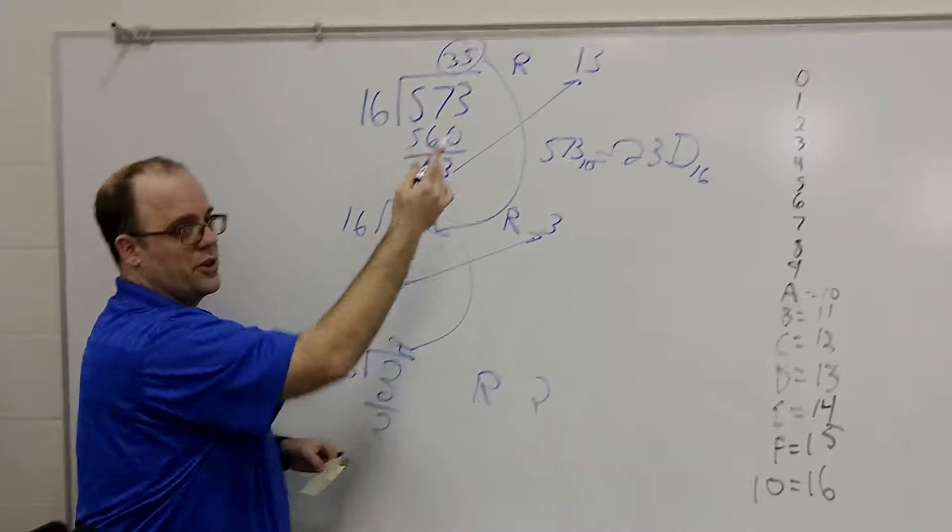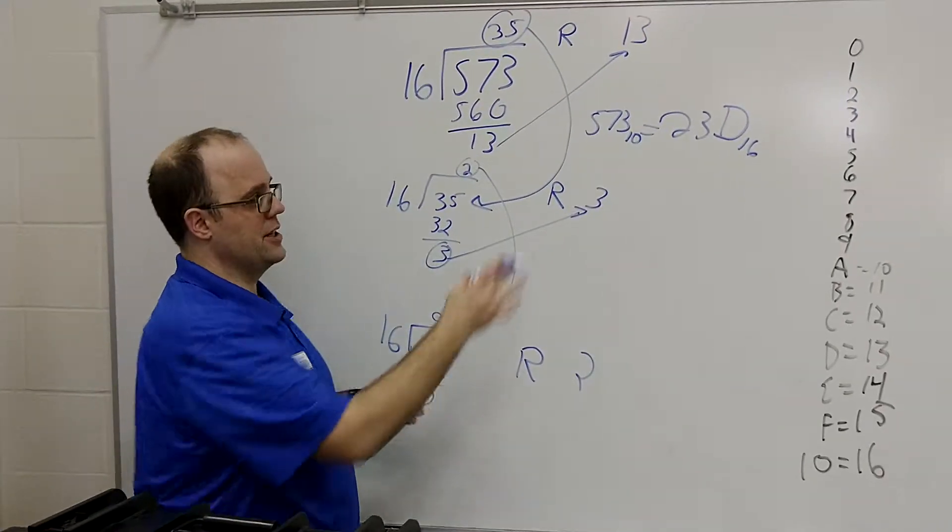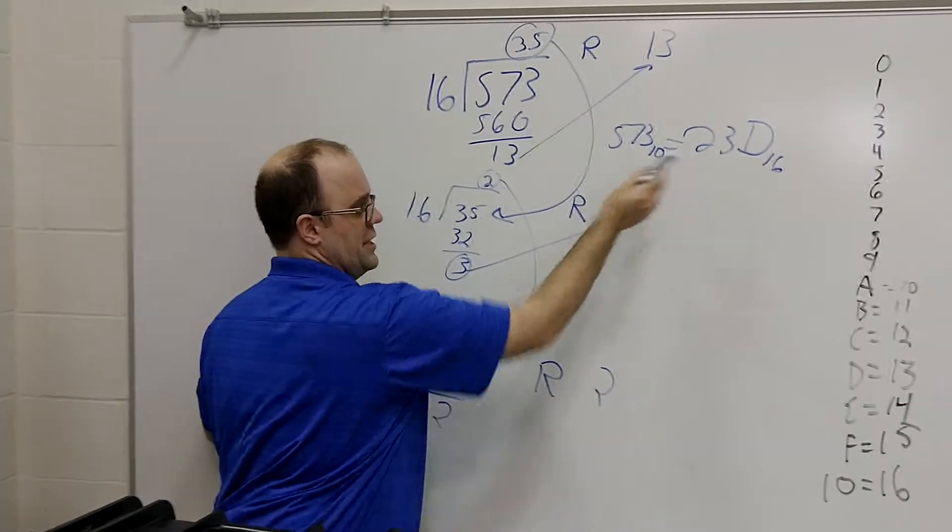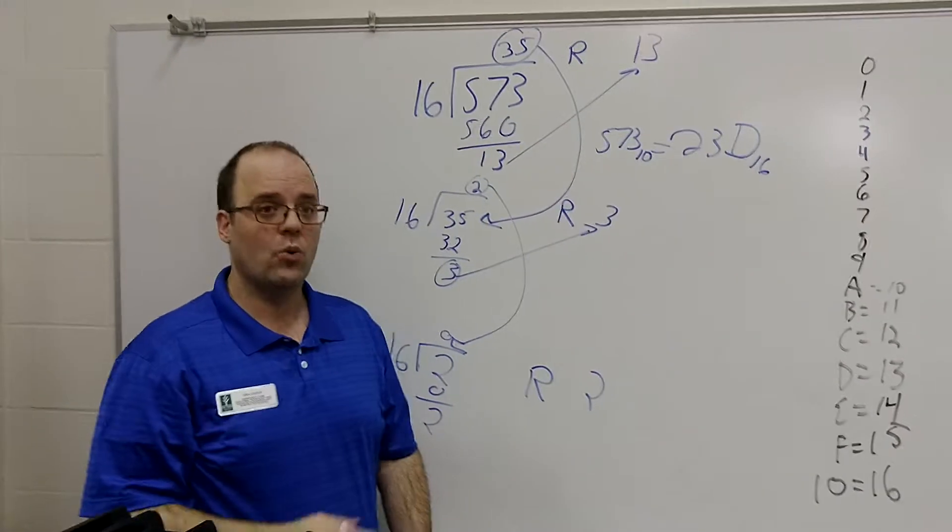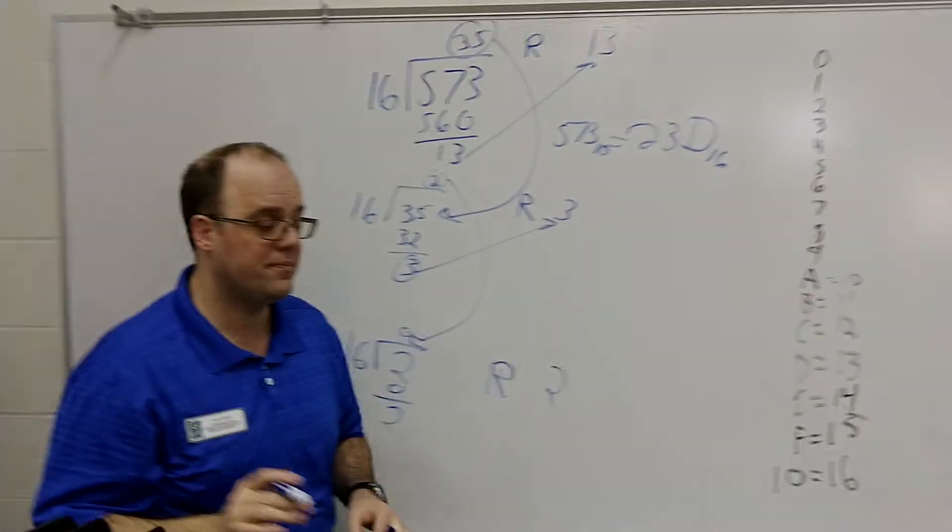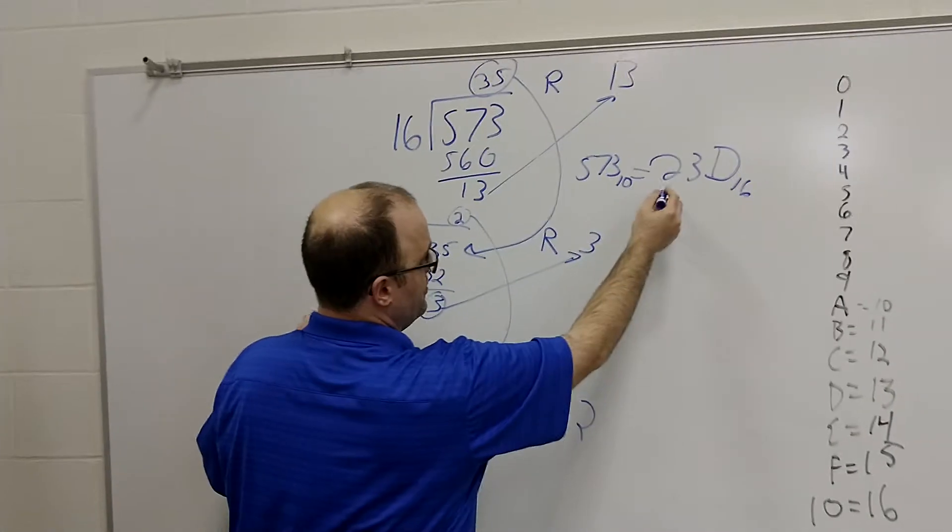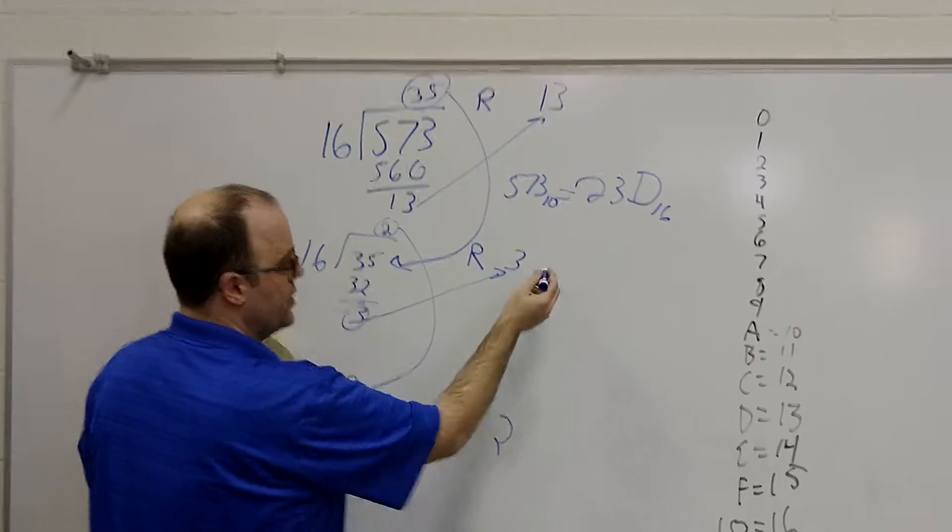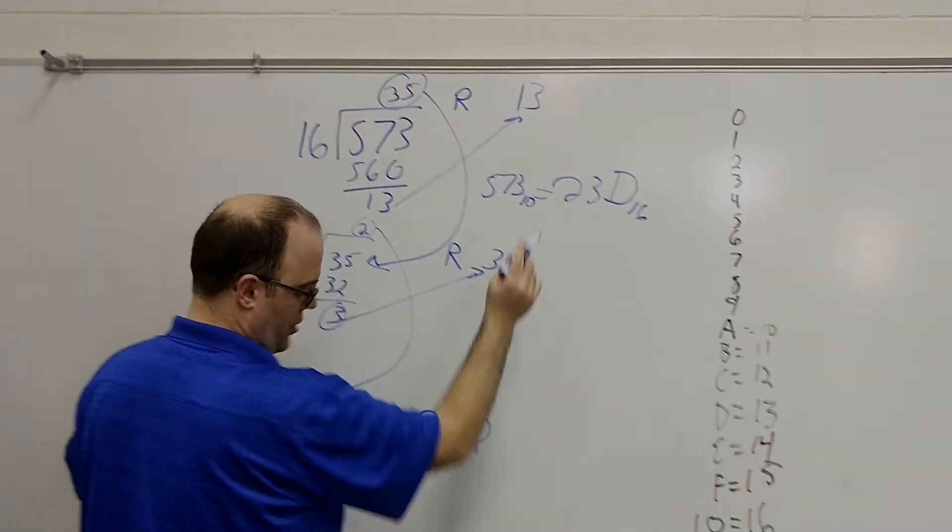So, and you can do this with any number. The good thing about hexadecimal takes less digits to do something else. Well, let's say I want to change this into binary. Well, that's really, really easy. Because all we got to do is know what the binary form of 2 is.